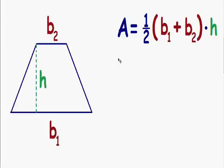Here we're going to find the area of a trapezoid. The formula we use is A equals one-half multiplied by B1 plus B2, multiplied by the height. A stands for the area, B1 stands for the length of the bottom side, and B2 stands for the length of the top side. You can switch B1 and B2 — that's perfectly okay — and you'll still get the same answer. The height is always the straight up-and-down distance between the top side and the bottom.